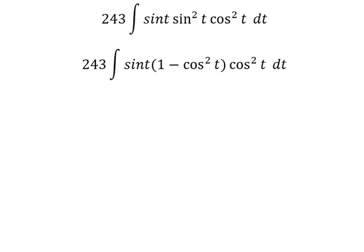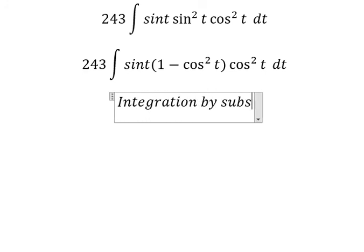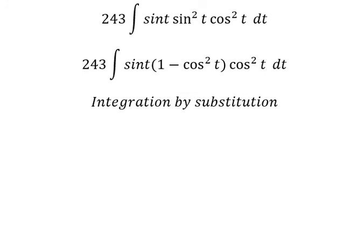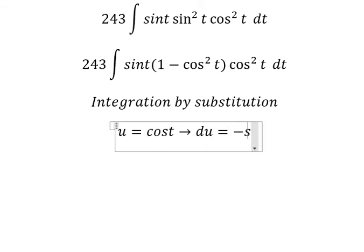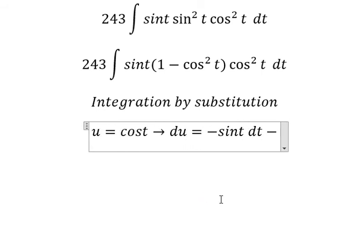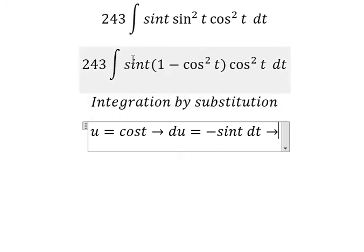Now we can use integration by substitution. I will put u equal to cos(t), so the sin(t) term can be expressed accordingly. We take the first derivative of both sides and we get negative sin(t) dt. Because we don't have the negative sign here, I will move the negative to the left.